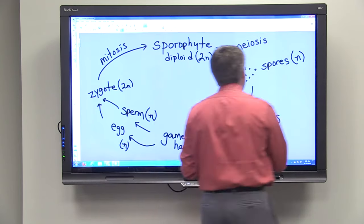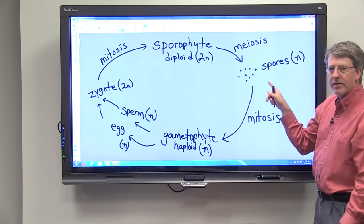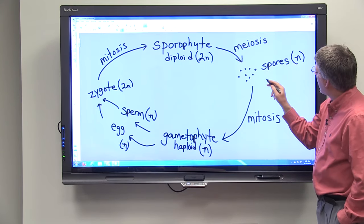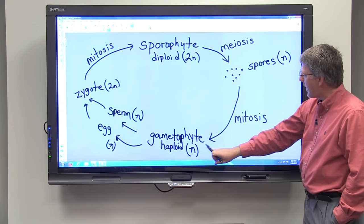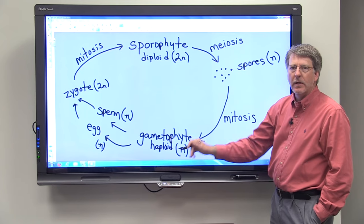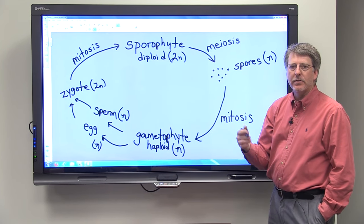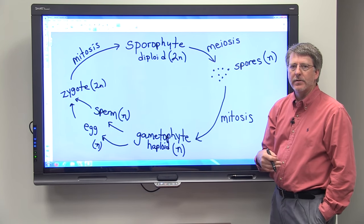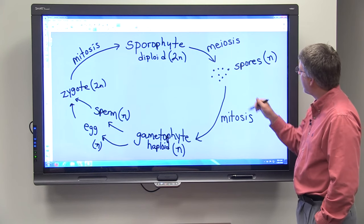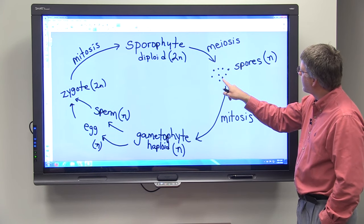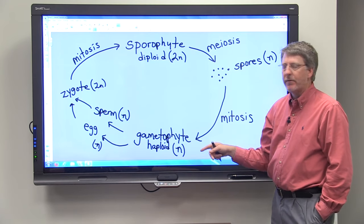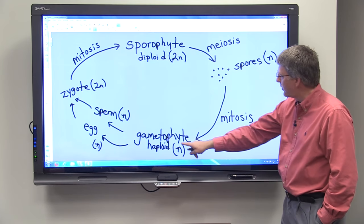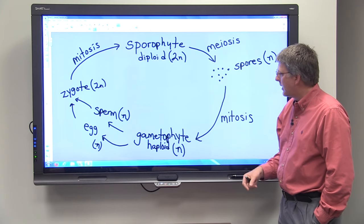Now sometimes this is confusing because this is the first time that you've probably heard of haploid cells dividing by mitosis and producing more haploid cells. But remember, with mitosis, one cell divides and produces daughter cells that are genetically identical. So this haploid spore will divide and produce two cells and then those two will divide and we'll get a gametophyte.